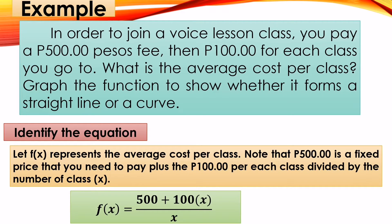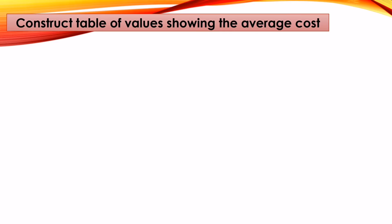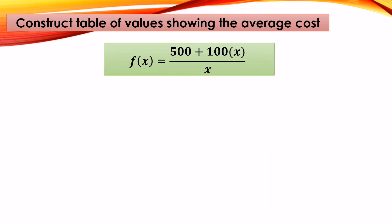So our function is f(x) = (500 + 100x) / x, where 500 is the fixed price, 100 is the cost per class visit, x is the number of classes, and we divide by x to get the average. After identifying the equation, we need to construct a table of values showing the average cost. Our function is f(x) = (500 + 100x) / x.